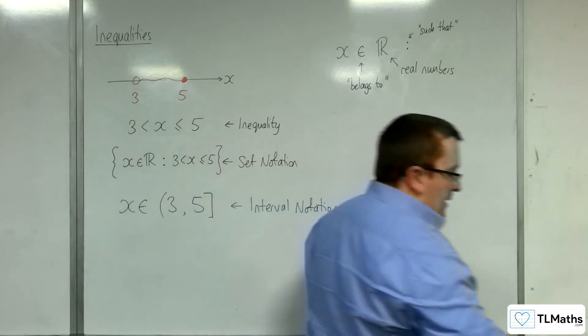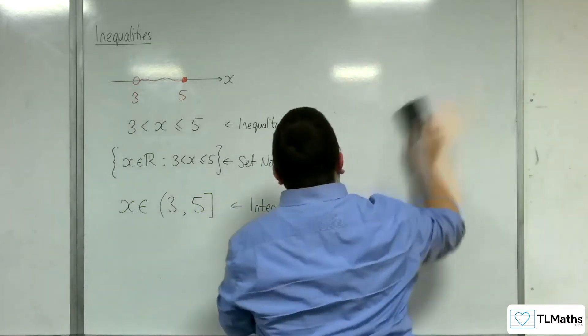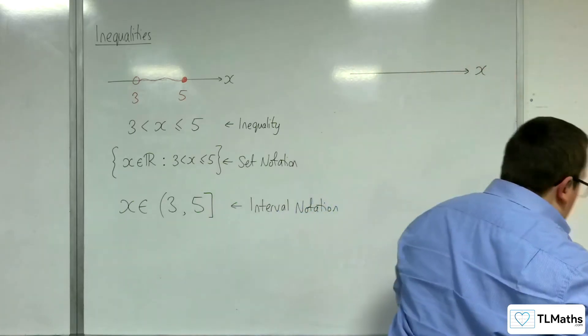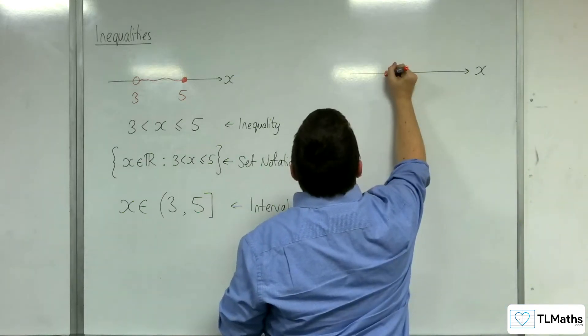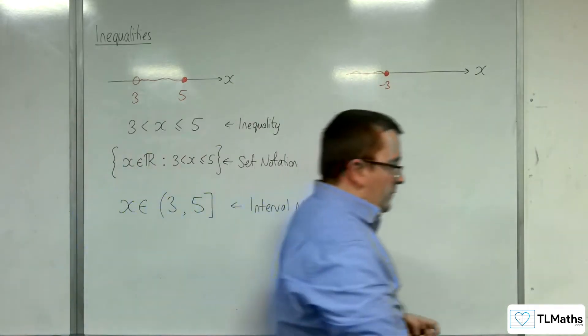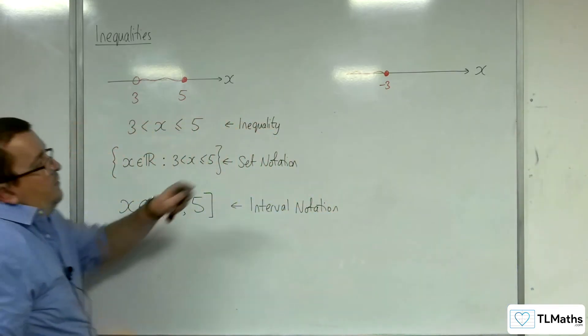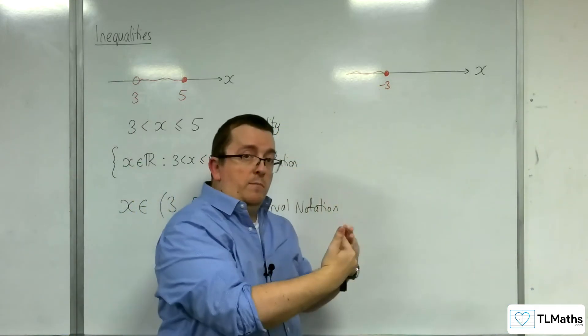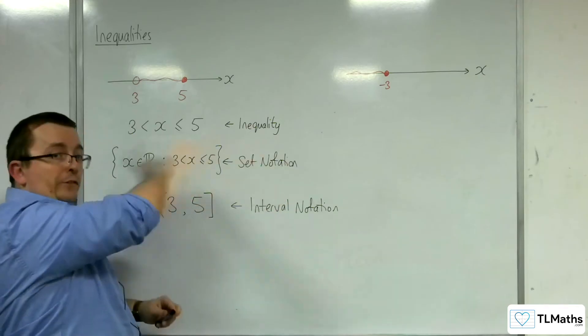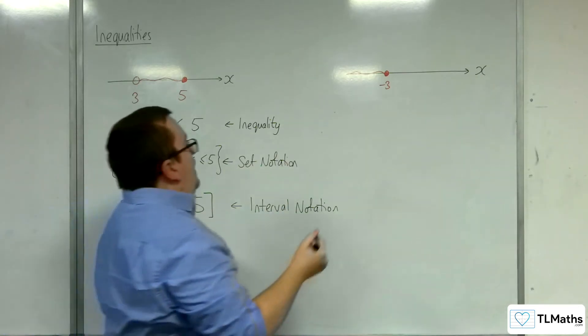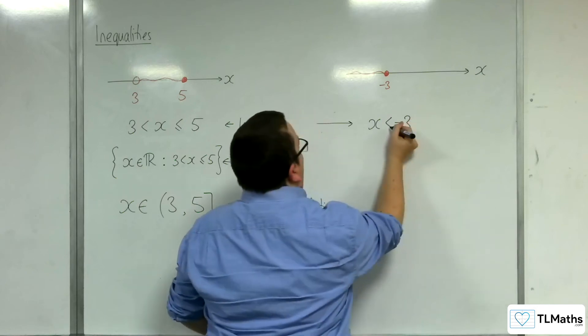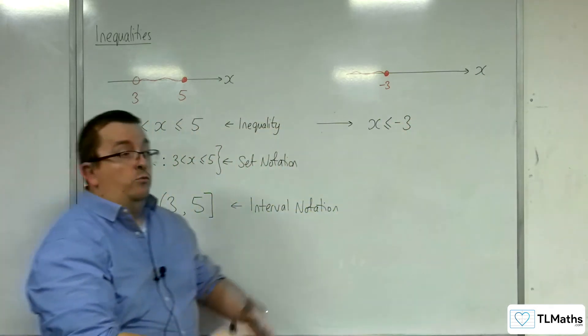Let's take a look at another example. Let's say we've got our number line, and this time, let's do minus 3, down that way. From here, it's from minus 3, including minus 3, and all the way down to as far as you can go. Obviously, it doesn't stop, you keep going. As an inequality, we would just write down that x is less than or equal to minus 3. Because we're including the minus 3.